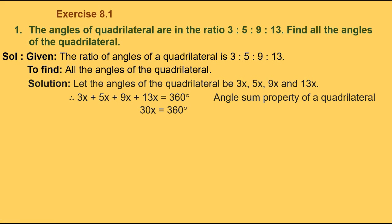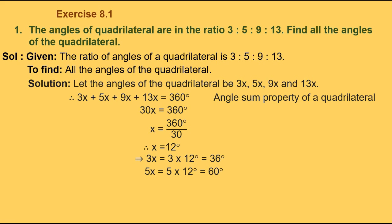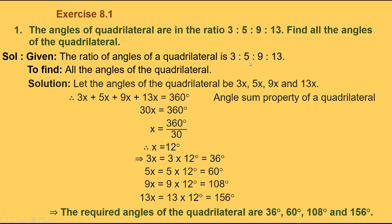So x equals 360 degrees divided by 30. The zeros get cancelled and 3 × 12 = 36, therefore x equals 12 degrees. This implies 3x = 3 × 12 = 36 degrees. 5x = 5 × 12 = 60 degrees. 9x = 9 × 12 = 108 degrees. And 13x = 13 × 12 = 156 degrees. This implies the required angles of the quadrilateral are 36°, 60°, 108°, and 156°. So given the ratio of angles, we could find the measure of each angle.